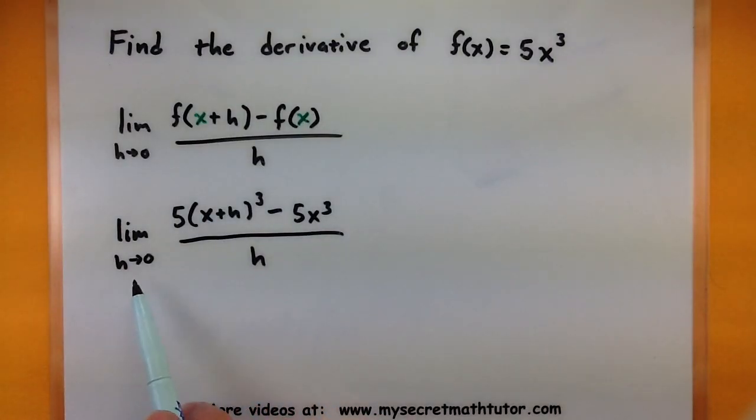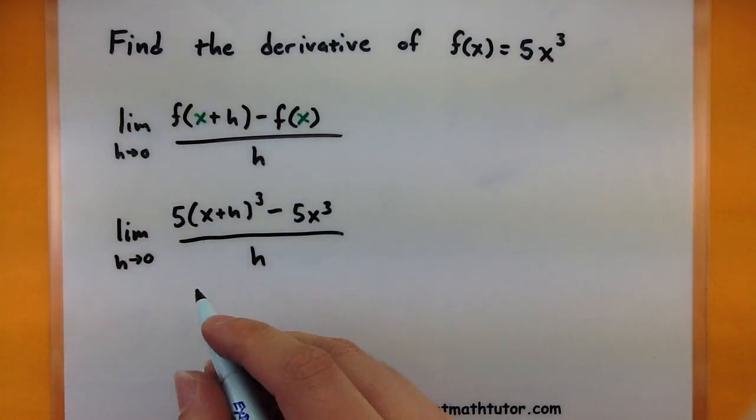Now to continue simplifying this and hopefully be able to do my limit a little bit later on, we must expand out this cubed. So imagine taking x plus h multiplied by x plus h multiplied by x plus h.